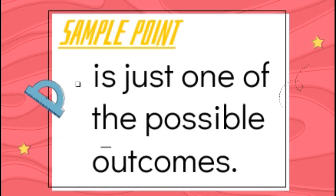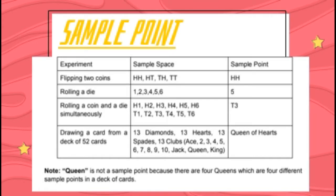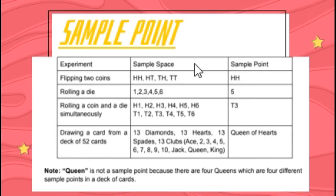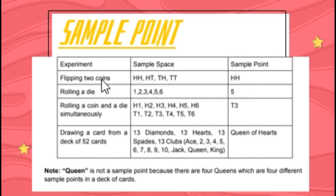Sample point is just one of the possible outcomes. To further understand sample point, I have a table with three columns: all the experiments, all the sample space, and the sample points. Our experiments are flipping two coins, rolling a die, rolling a coin and a die simultaneously, and drawing a card from a deck of 52 cards. Sample space is the set of all possible outcomes of our experiments.